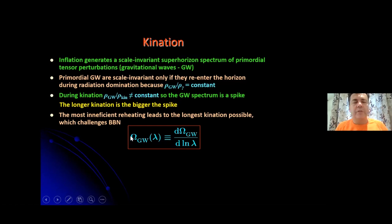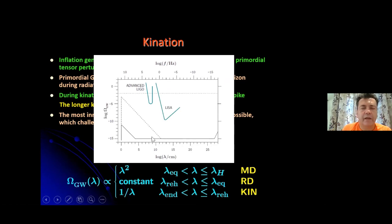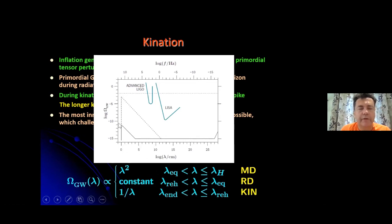The most important consequence of kination is that it generates a spike in the gravitational wave spectrum. Inflation generates a nearly scale-invariant spectrum of primordial tensor perturbations — constant for modes re-entering the horizon during radiation domination, since both gravitational wave density and radiation density scale as a^{-4}. But during kination, the density scales as a^{-6}, so instead of scale invariance the spectrum grows — forming a spike. The longer kination lasts (determined by reheating efficiency), the bigger the spike. The most inefficient reheating leads to the longest kination and the largest spike, which can challenge Big Bang nucleosynthesis constraints — the sacred cow of cosmology.